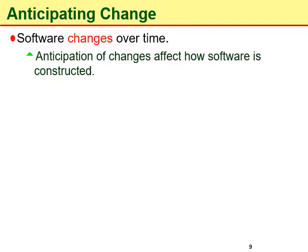Then, anticipating change. Most software actually changes over time, and the anticipation of change drives many aspects of software construction. Similarly, changes in the environment in which software operates also affect software in different ways. Therefore, anticipation of changes helps software engineers develop extensible software systems, which means they can enhance a software product without disrupting the underlying structure.